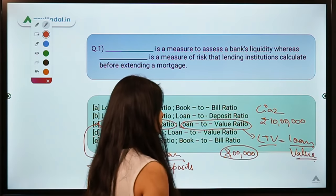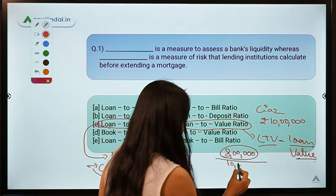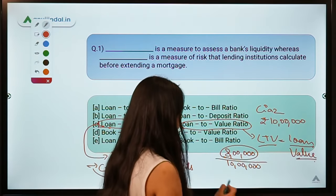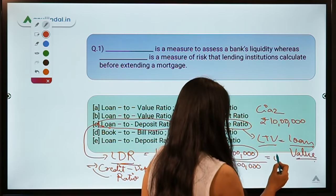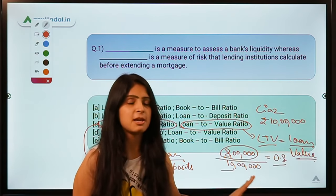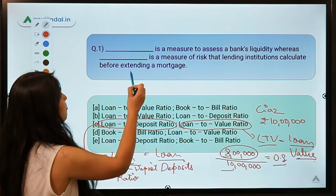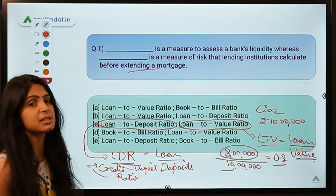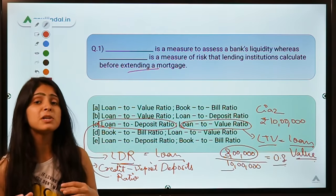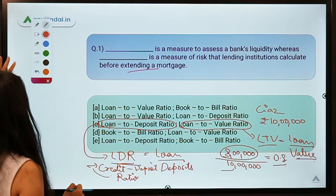In the LTV ratio, we divide the loan amount by the value of the asset being purchased. Here, 8 lakh divided by 10 lakh gives 0.8 — meaning 80% of the car is financed. LTV is calculated by lending institutions before extending a mortgage, while LDR tells us about the liquidity status of the bank.